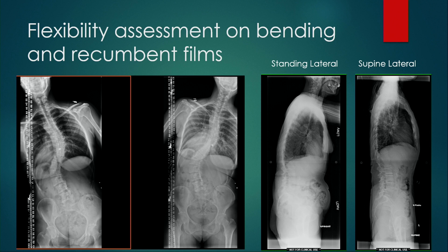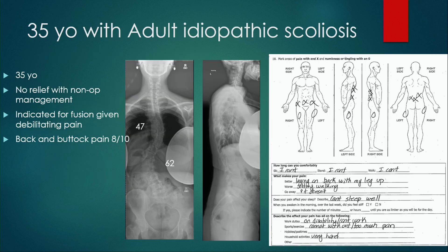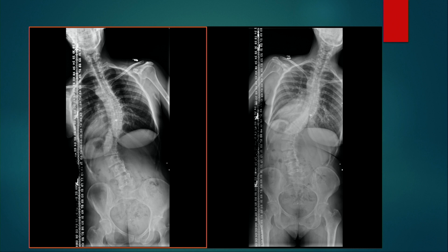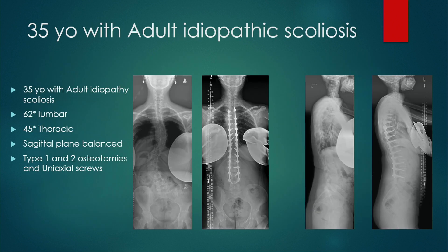For patients with flexible deformities, the mainstay of treatment is type 1 and type 2 osteotomies — we typically don't need three-column osteotomy or interbody fusion. For example, a 35-year-old with adult idiopathic scoliosis refractory to non-operative management had a flexible lumbar curve and somewhat flexible thoracic curve, with no significant facet arthrosis from L4 to L1. The plan was to correct her scoliosis using just type 1 and type 2 osteotomies with uniaxial screws to derotate the spine, achieving reasonable correction without interbody work.